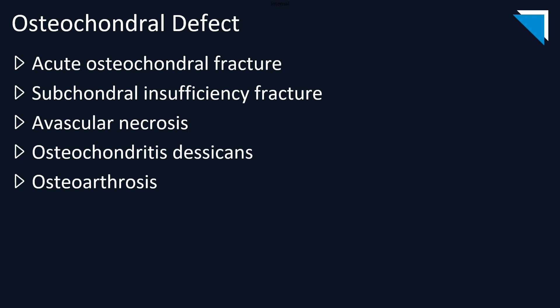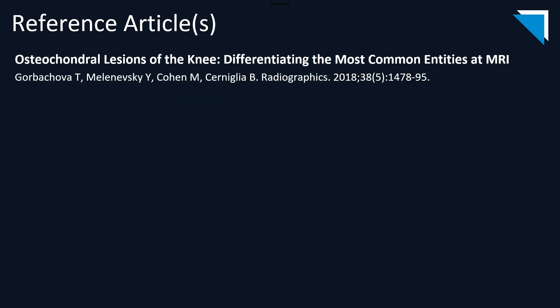Frankly, what you call the lesion is much less important than staging it. If you see fluid undercutting the fragment, adjacent cystic change, or abnormality of the overlying articular cartilage, those are some of the indications of lesion instability, which can necessitate surgical intervention. In our case, the overlying articular cartilage was normal, indicating a lower-grade stable lesion, for which conservative therapy is generally the first-line treatment. This journal article offers an excellent review of the different types of osteochondral lesions and some of the ways you can differentiate them from one another.